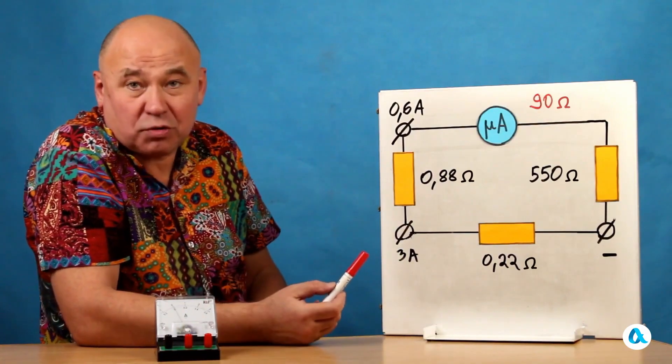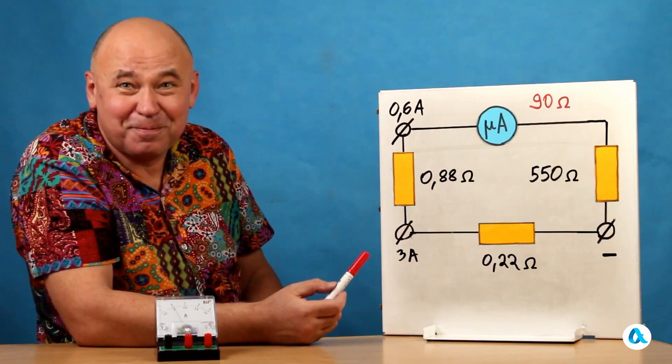That's how our device is constructed. Now, we need to talk about how the resistors installed inside the case of this device turn a microammeter into a voltmeter.